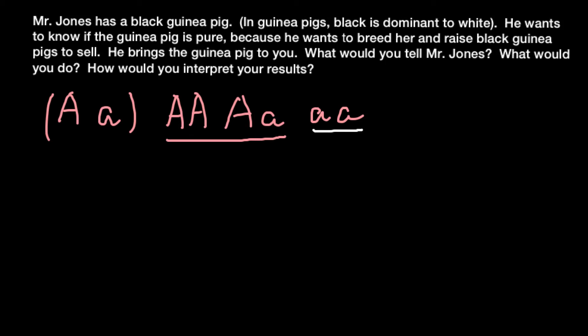So the real question is whether Mr. Jones has a homozygous black or a heterozygous black guinea pig. If he has a homozygous black guinea pig and crosses it with another homozygous black, all of the progeny would also be black. We call this situation a pure breed, because in following generations this trait would be stable and would not segregate into two different results, for example black and white.